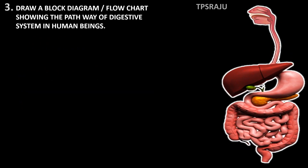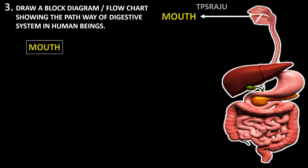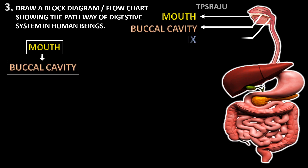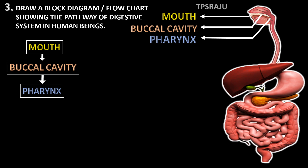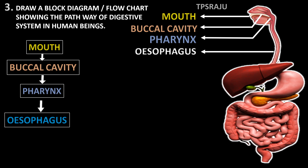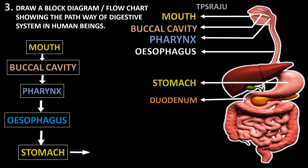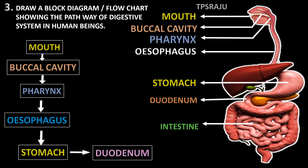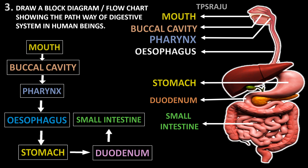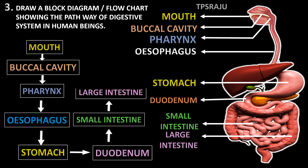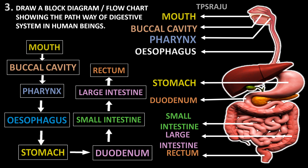Then, the third question. The passage of food through the digestive system is: Mouth, Buccal cavity, Pharynx, Esophagus, Stomach, Duodenum, Small Intestine, Large Intestine, Rectum and Anus.